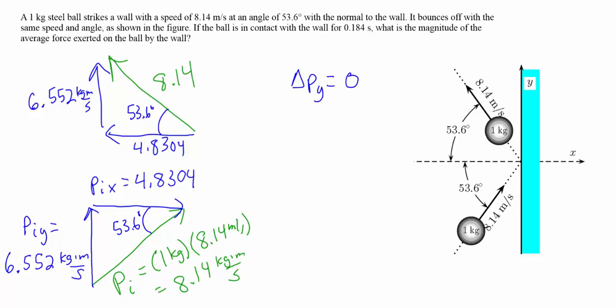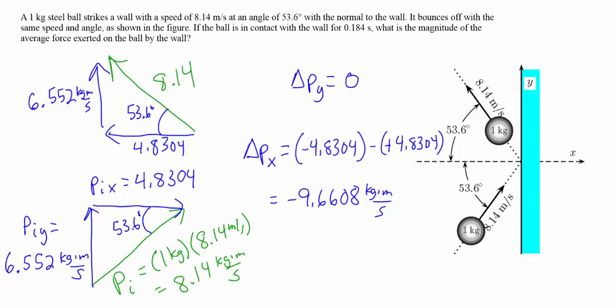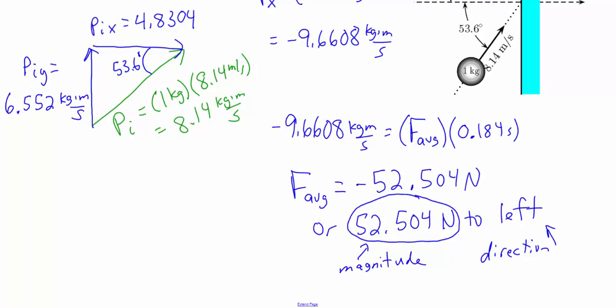The change in momentum in the x direction is not zero — the ball was moving to the right initially and now moves to the left. The change in x momentum is the final x component, negative 4.8304, minus the initial x component, positive 4.8304, giving negative 9.6608 kilogram meters per second. Setting this equal to average force times time: negative 9.6608 equals force times 0.184 seconds, so the average force is negative 52.504 newtons — a magnitude of 52.504 newtons to the left.